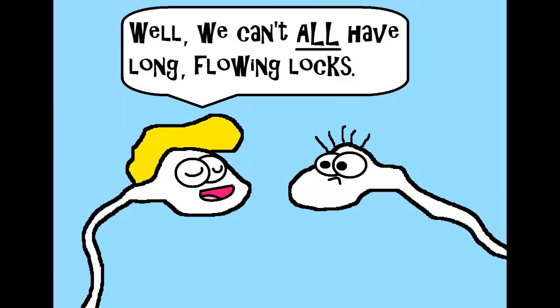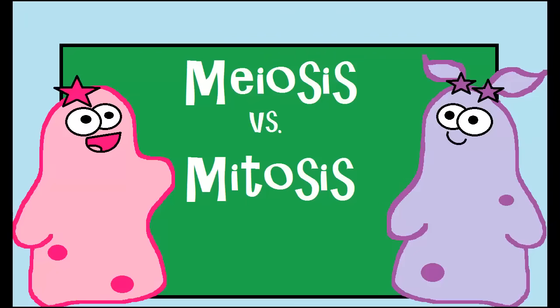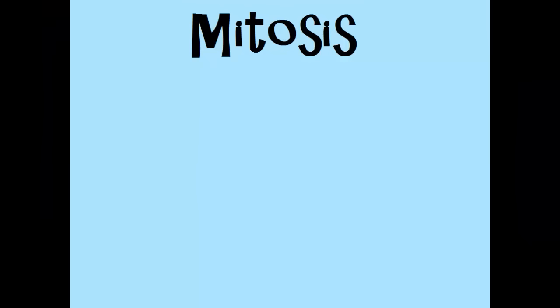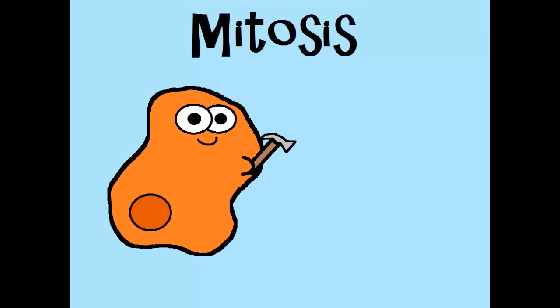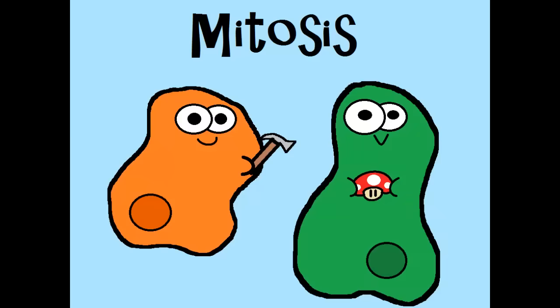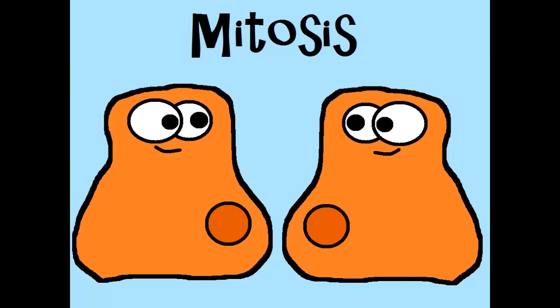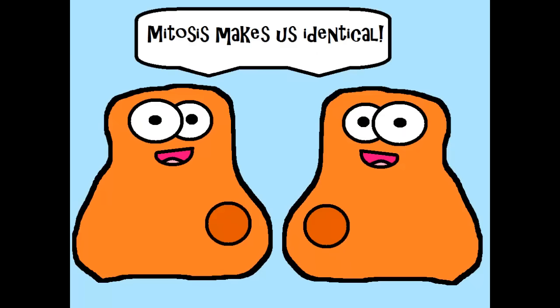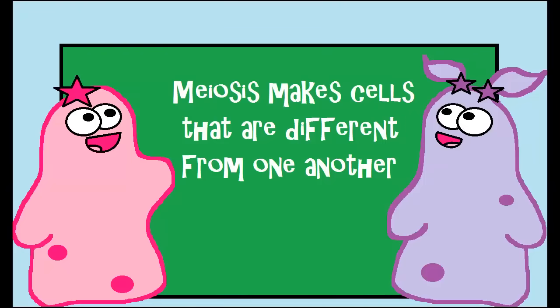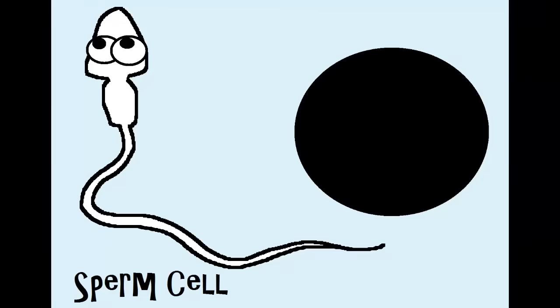In males, all the sperm cells produced are going to be different — they're not identical cloned sperm cells. This whole process is really different from mitosis. Mitosis was great for repairing damaged or worn-out cells and for growth because it makes body cells. Mitosis has to make identical cells — like when you have a cut and need to replace damaged skin cells with identical skin cells. Meiosis is not about making identical cells.